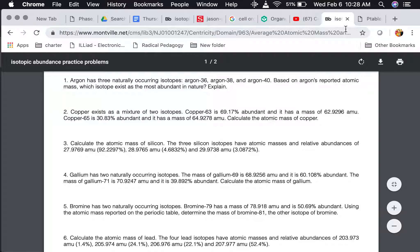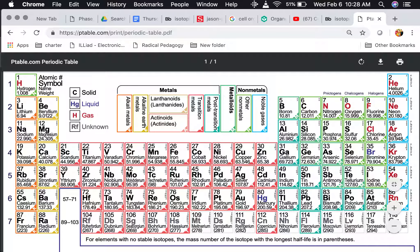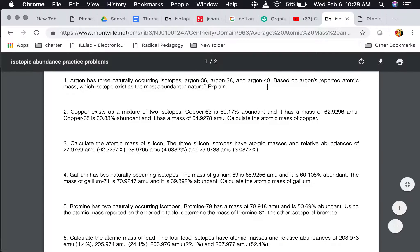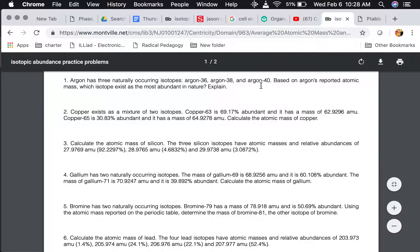If you look at this atomic mass, what is that number closest to? 39.948. If you were to round it, that number would be closest to argon 40. So because that atomic mass is closest to 40, we know that argon 40 is the most abundant one.